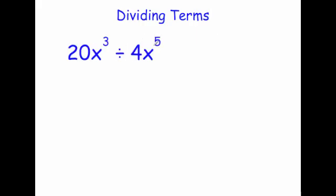Let's look at 20x cubed divided by 4x to the power of 5. Divide the numbers at the front: 20 divided by 4 is 5. Then take away the powers of x: 3 take away 5 is minus 2. So the answer is 5x to the power of minus 2.